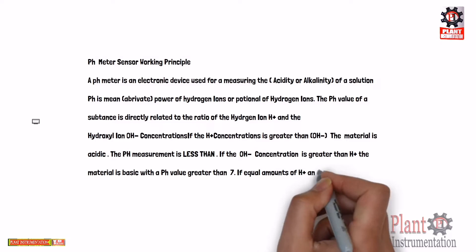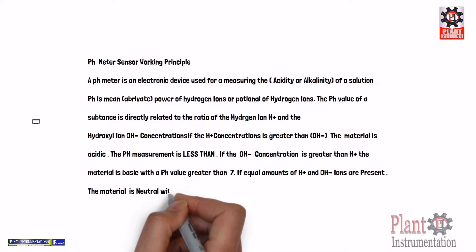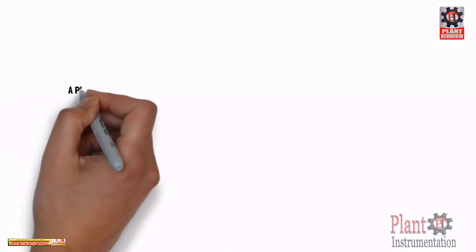If equal amounts of H+ and OH- ions are present, the material is neutral with a pH of 7.